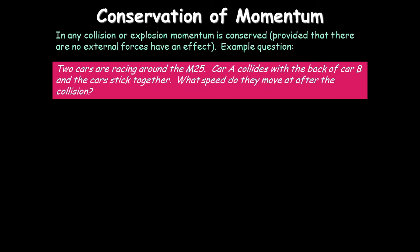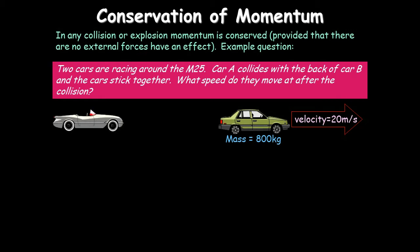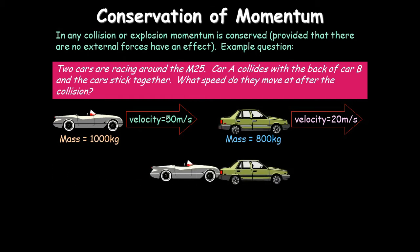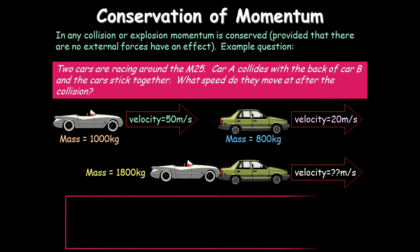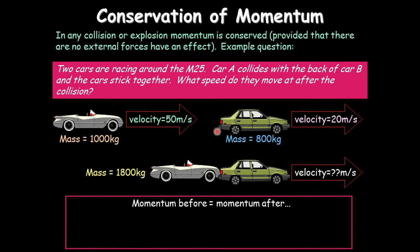When objects collide, momentum before and after must be the same. Consider two cars: car one has mass 800 kg, velocity 20 m/s; car two has slightly bigger mass and bigger velocity, catches up and collides. The two cars stick together and move off at a certain velocity. To find that velocity, add the momentum of each car before the collision — that total must equal the combined mass times velocity after.